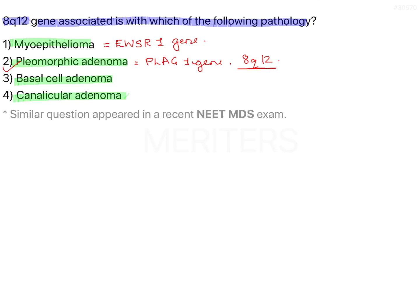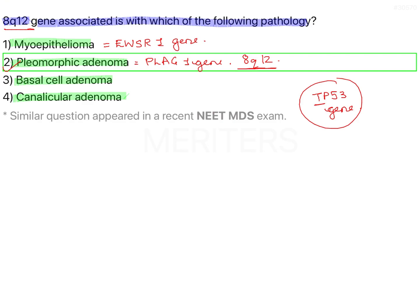On a parallel note, basal cell carcinoma occurs because of ultraviolet radiation and is associated with the TP53 tumor suppressor gene — TP stands for tumor suppressor and 53 is the coding. So remember this distinction: here the question is about 8q12, and the correct answer is pleomorphic adenoma.